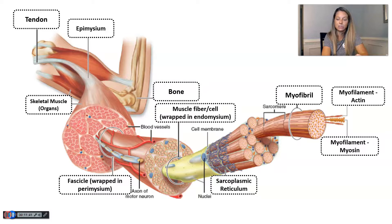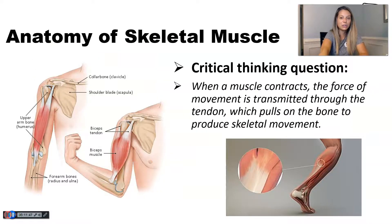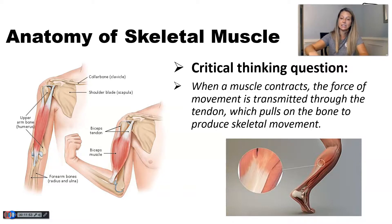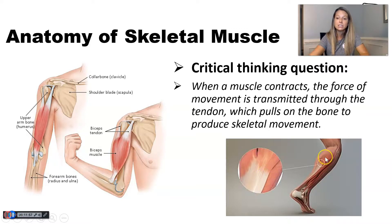Here's the answer to the critical thinking question: when a muscle contracts, the force of movement is transmitted through the tendon, which pulls on the bone to produce skeletal movement. For example, your gastrocnemius muscle — which is in your calf — is actually attached to your heel.